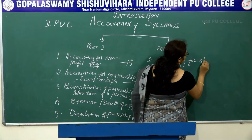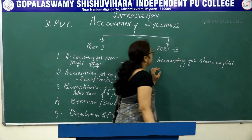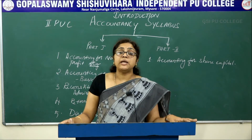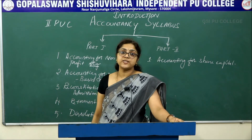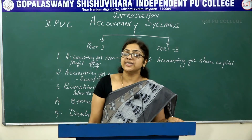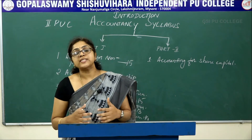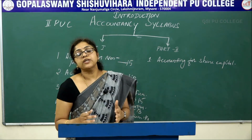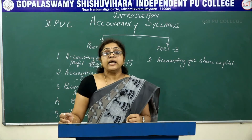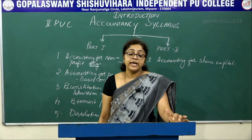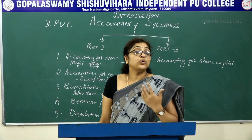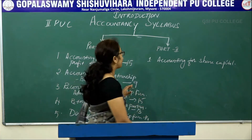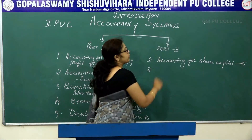Before knowing share capital, let us understand the meaning of a company. A company is an artificial person created under the law, having perpetual succession and a common seal used for its signature. If a company requires capital, it issues shares to the public to raise funds. In this chapter you learn about the features of a company, kinds of companies, share capital, types of shares, how to issue shares, accounting treatment, and forfeiture and reissue of shares. Total marks allotted to this chapter is 15.